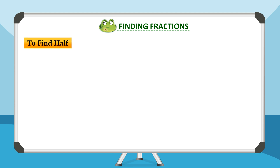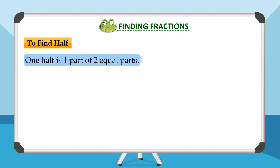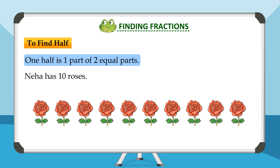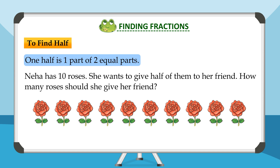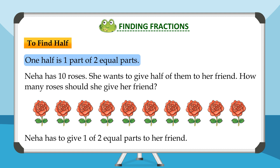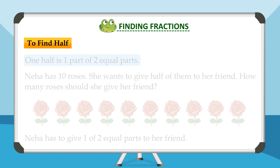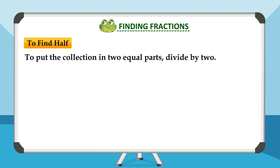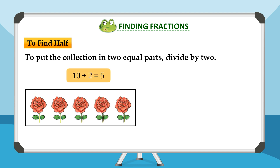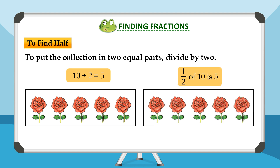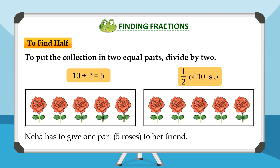Finding fractions — To find half: one-half is one part of two equal parts. Neha has ten roses. She wants to give half of them to her friend. How many roses should she give her friend? Neha has to give one of two equal parts to her friend. To put the collection into two equal parts, divide by two. Ten divided by two is equal to five. Half of ten is five. Neha has to give five roses to her friend.